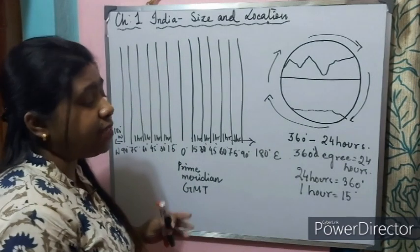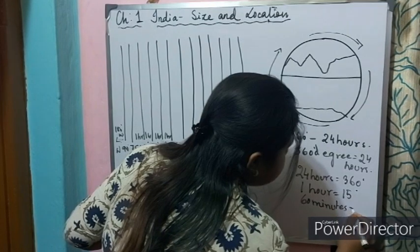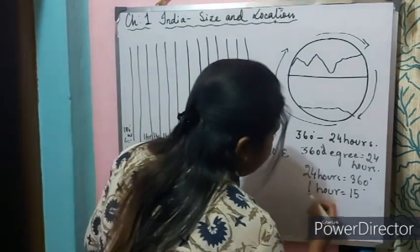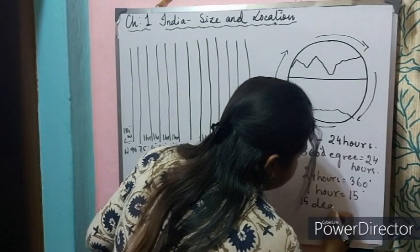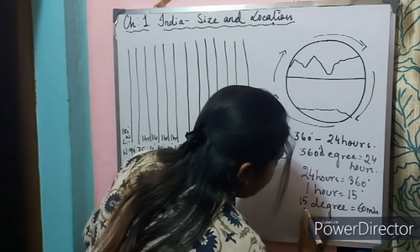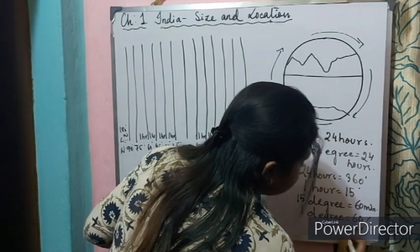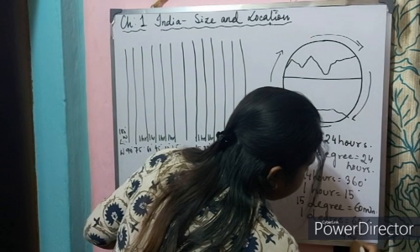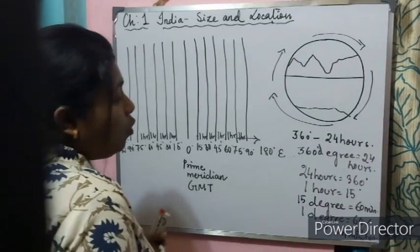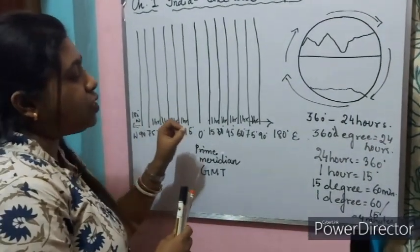Now, understanding this in terms of minutes: one hour equals 60 minutes, and Earth covers 15 degrees in 60 minutes. So one degree takes 60 divided by 15, which equals 4 minutes. This means each degree of longitude corresponds to a local time difference of 4 minutes.